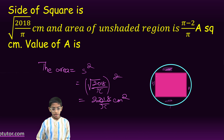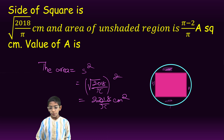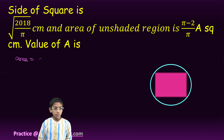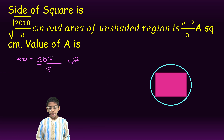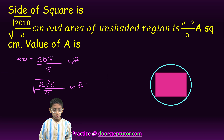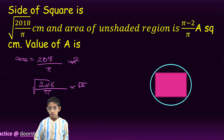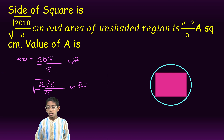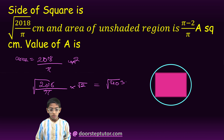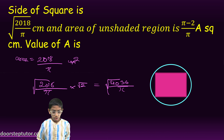Now we will find the area of the circle. To find that we will first have to find the diagonal of the square, which is equal to the diameter of the circle. The diagonal will be the side multiplied by root 2, so under root of 2018 upon pi into root 2. This formula is given by the Pythagoras theorem: side squared plus side squared gives root 2 times side, which equals under root of 4036 upon pi. So this is the diameter of the circle.